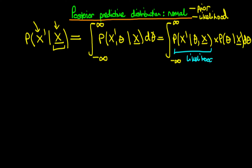We note that this first term is essentially the likelihood. Part of our model states that if we know theta, then observations are conditionally independent. That means I can actually remove the conditioning on our vector of observations, because theta tells me all there is that connects x-primed with our vector of observations. And this second part — the probability of theta given our vector observations x-underbar — is simply our posterior density.